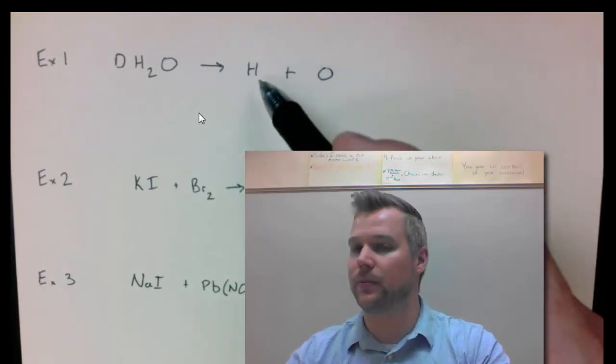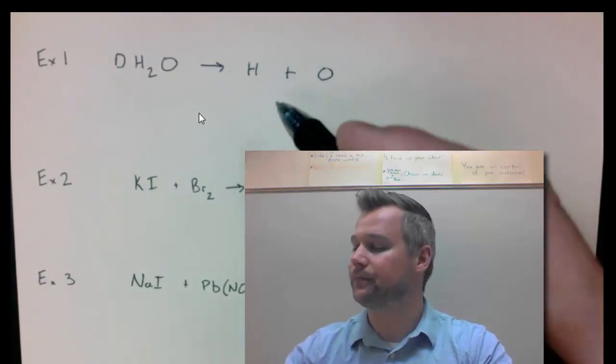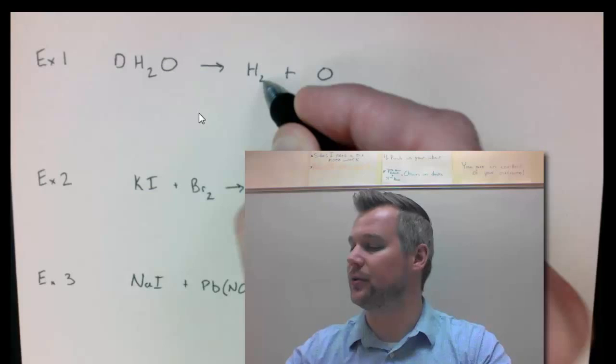And then step 4 would be to look and see if these elements happen to be diatomics. And both of these are. These both require a subscript 2.